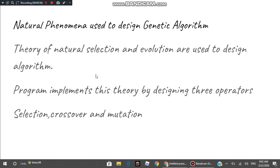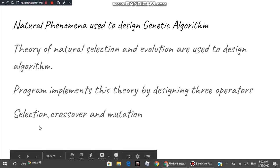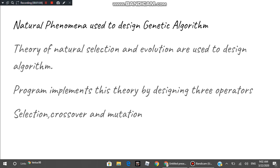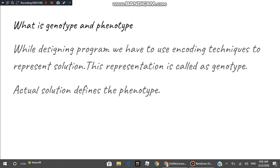Whatever program we write for genetic algorithm, we always implement three functions, which are known as operators. Those three operators are selection, crossover, and mutation. Before discussing these operators, let us discuss what genotype and phenotype are.